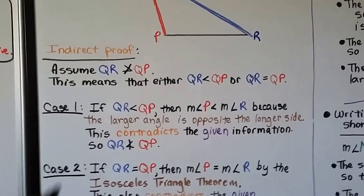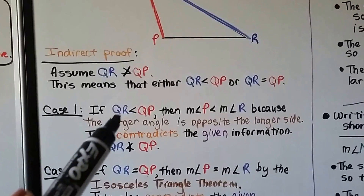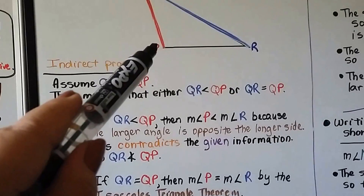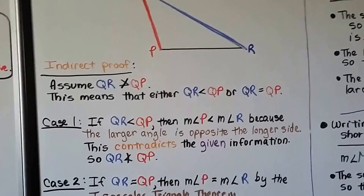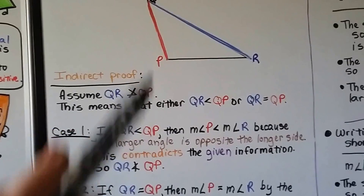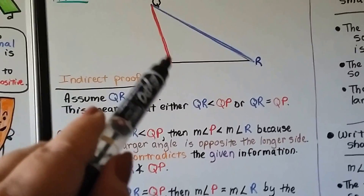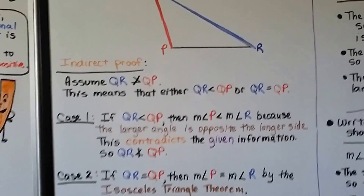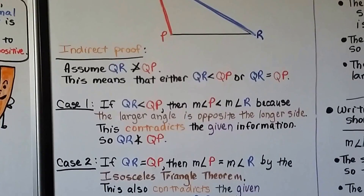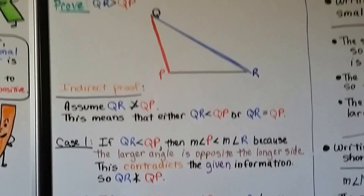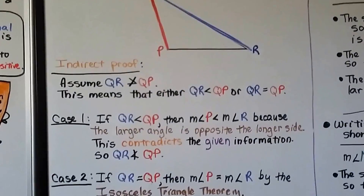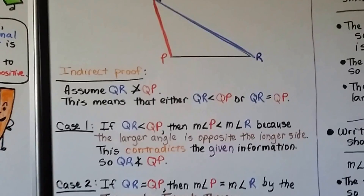For case one, if QR is less than QP, then the measure of angle P is less than the measure of angle R, because the larger angle is opposite the longer side. So if QR is shorter, angle P can't be larger than angle R. This contradicts the given information that angle P is larger. So QR is not less than QP.